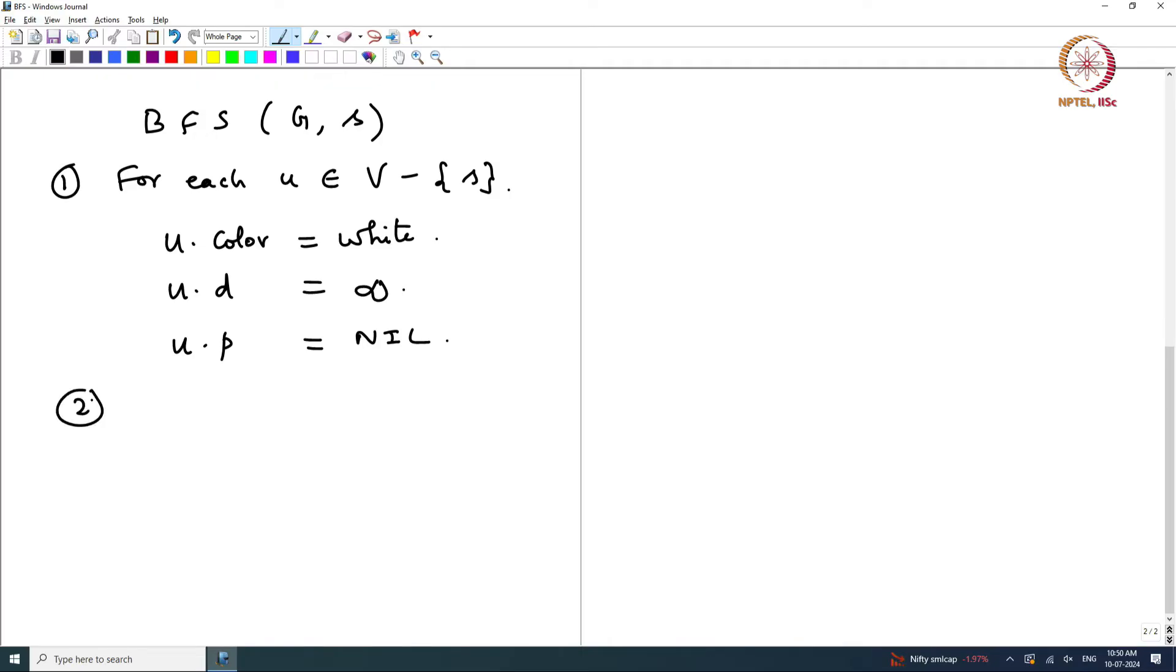Step 2, you have to initialize for s. s.color equals grey because we are now considering this. s.d equals 0, the number of edges you would use to go from s to s is 0. s.parent in the tree is nil. You have initialized for all vertices and then enqueue s. This means insert s in q. This is the initial setup.